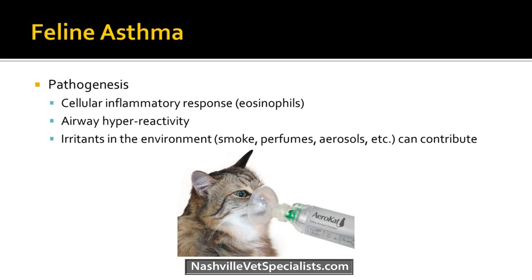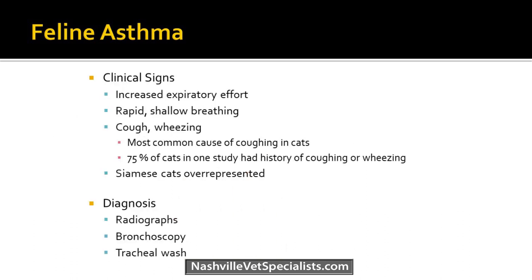The pathogenesis of asthma involves a cellular inflammatory response — not fully understood — triggered by irritants like smoke, perfumes, and aerosols. The airway becomes hyperreactive, causing more inflammation and distress. Clinical signs include increased expiratory effort, rapid shallow breathing, coughing, and wheezing. Asthma is the most common cause of coughing in cats — 75% of cats in one study had a history of coughing or wheezing. Siamese cats are overrepresented.